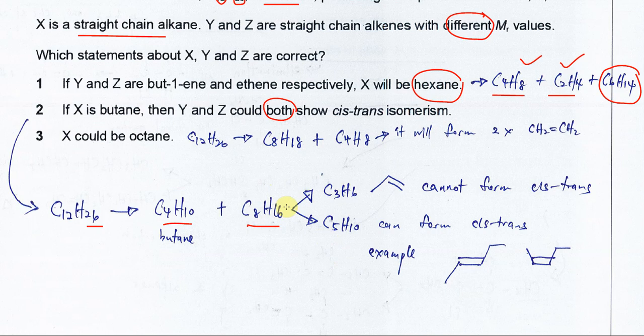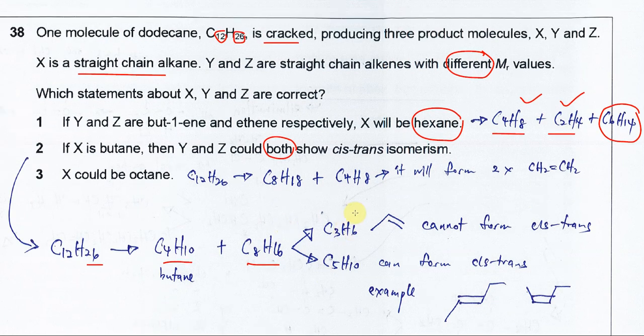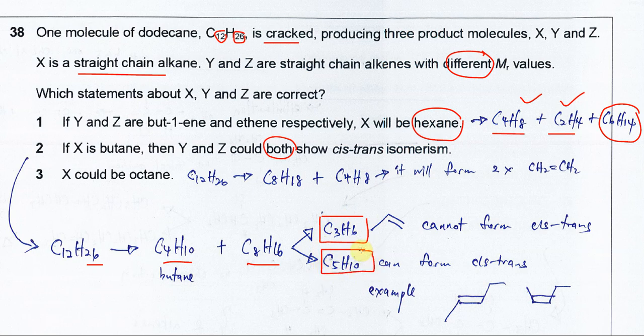C8H16 needs to form two different alkenes. Let's say it forms propene, then another one must be pentene because the carbon number total must be 8. It cannot be 4 each. If it's 4, they have same molar mass, but the statement says different molar mass for Y and Z. The straight chain alkenes cannot have the same molar mass, so it will be 3 and 5.